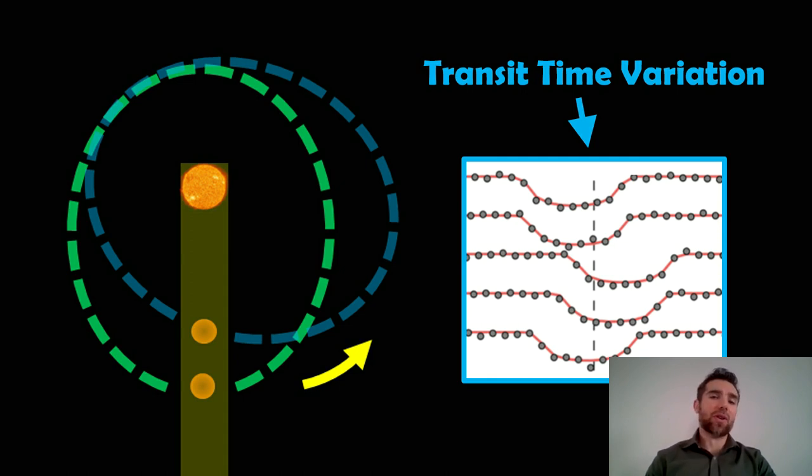I wanted to go back to the transit method of detecting exoplanets and have a look at something that can actually cause variation in those timings of the transits. The transits don't always occur at the time you would expect them to, and the duration can also change.